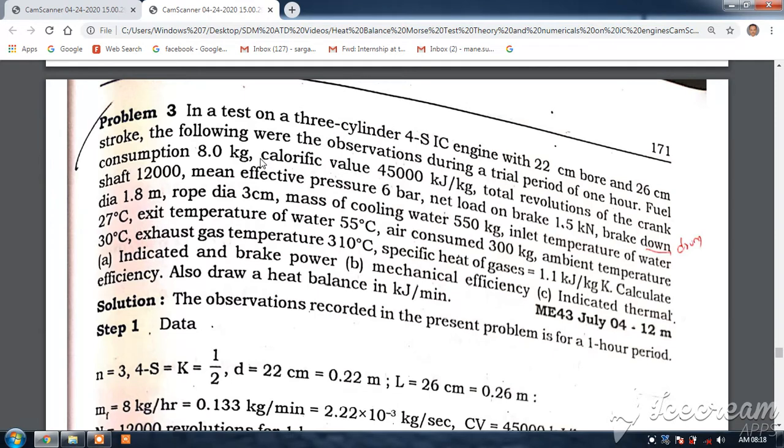In a test on a three-cylinder four-stroke IC engine with 22 centimeter bore and 26 centimeter stroke, the following were the observations during a trial period of one hour. Fuel consumption 8 kg, calorific value 45,000 kilojoules per kg, total revolutions of the crankshaft 12,000, mean effective pressure 6 bar, net load on the brake 1.5 kN.